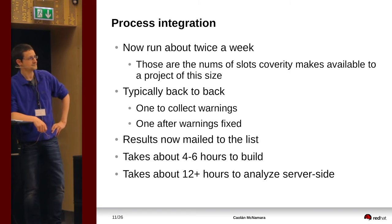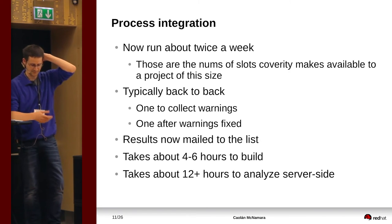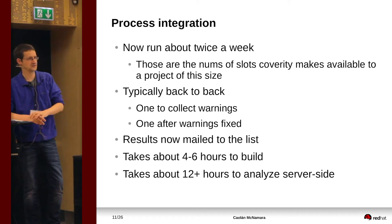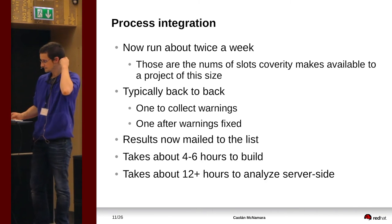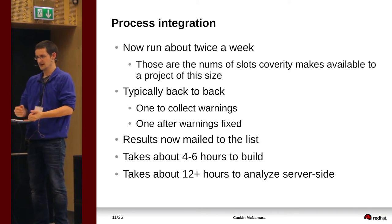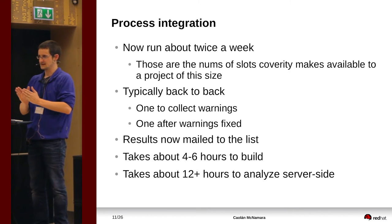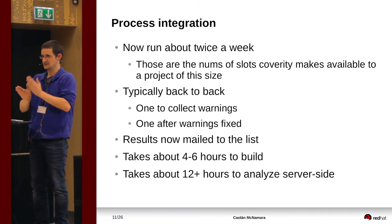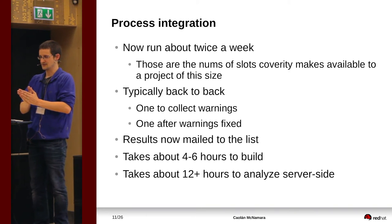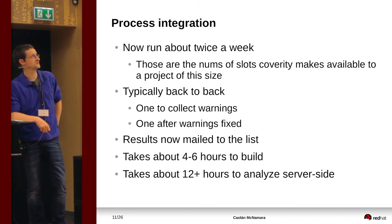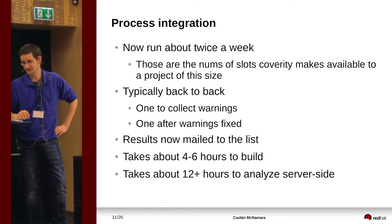Coverity gives open-source projects of our size two slots a week, so you can do two builds a week and can't build again until a week later. The way I do it is I don't evenly space them out — I do one build, get back the results, fix those warnings, and then do another build right away. That way I try to get a state where we have actually zero warnings, and I use the second slot to verify that the results of the first slot are actually fixed. If you get it wrong, you have to wait an entire week.